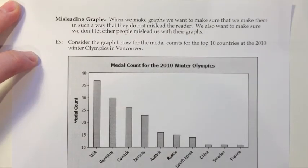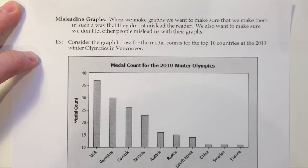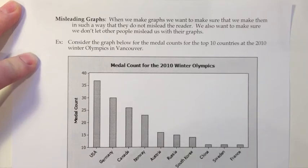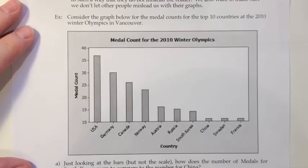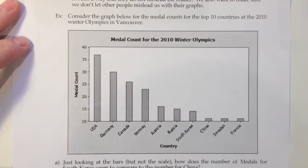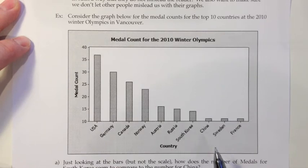The last topic for this section is misleading graphs. We want to avoid creating misleading graphs and also be able to recognize when someone else's graph is misleading. Consider the graph showing medal counts for the top 10 countries at the 2010 Winter Olympics, arranged in descending order — USA, Germany, Canada, Norway, Austria, Russia, South Korea, China, Sweden, and France.